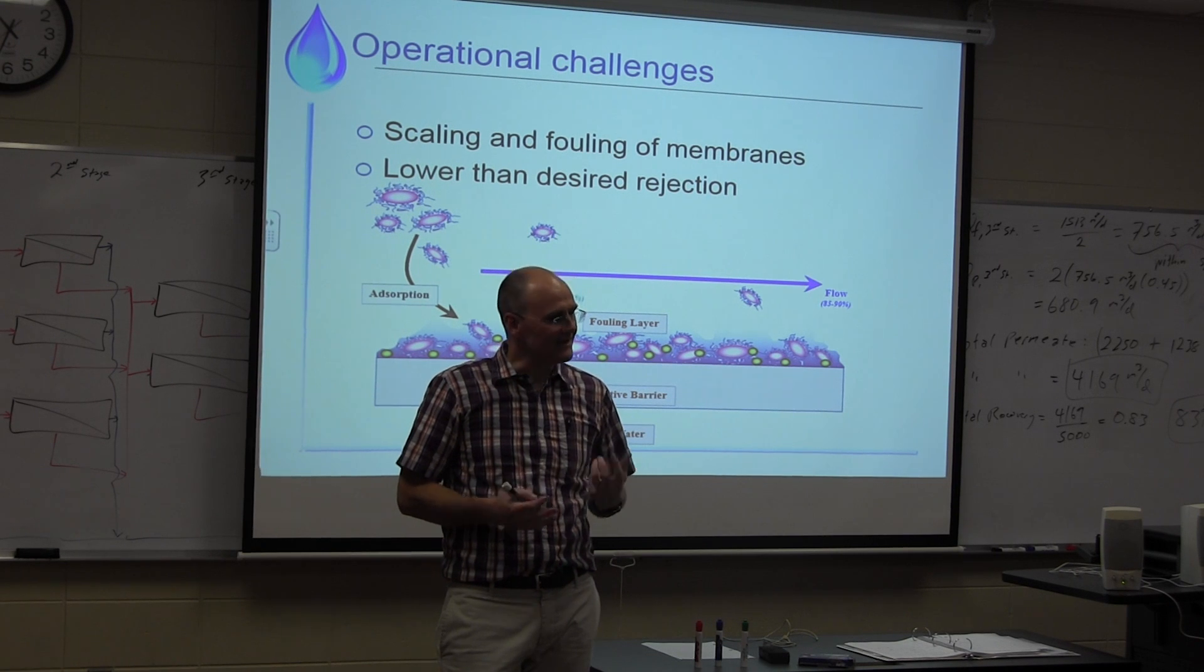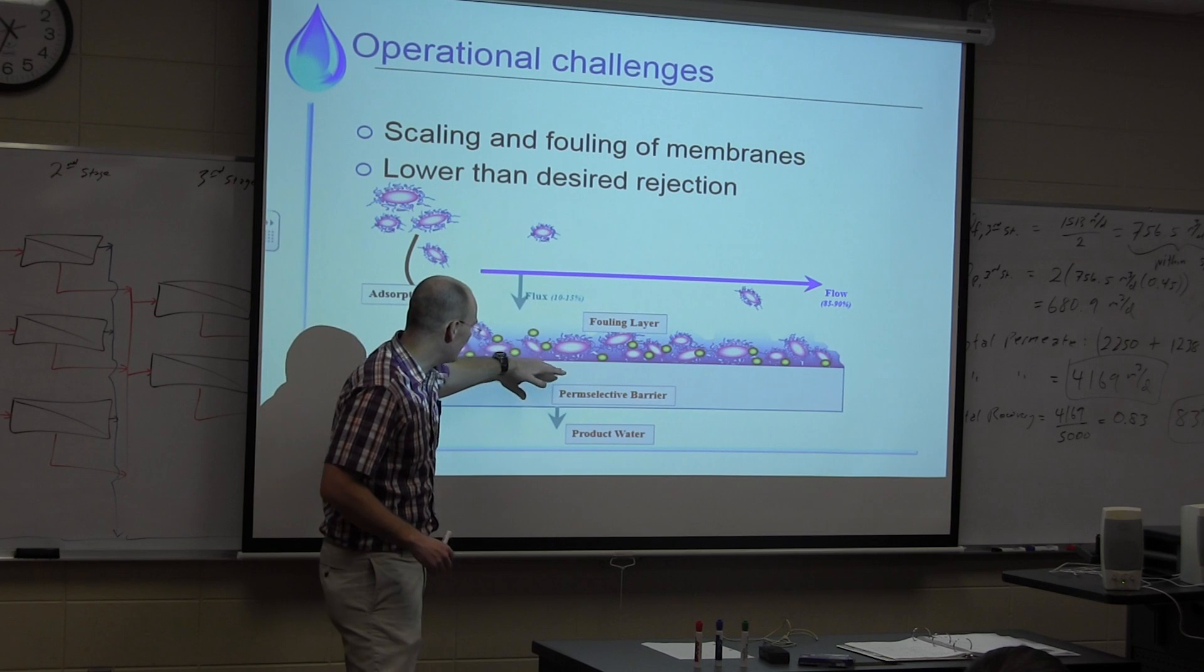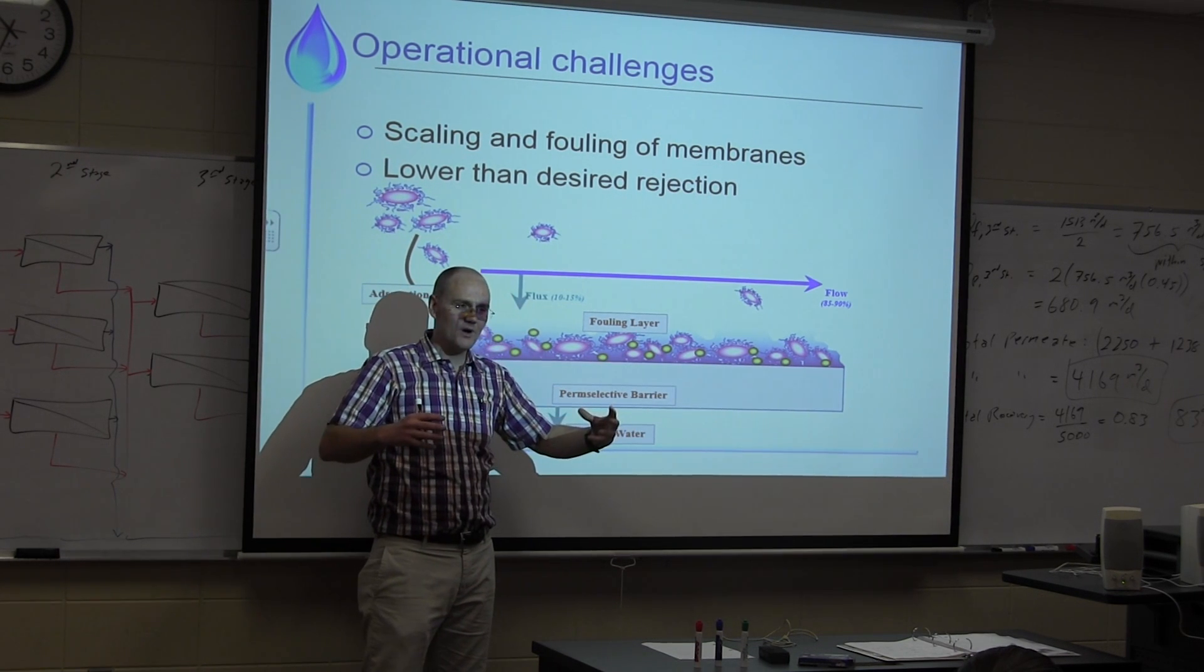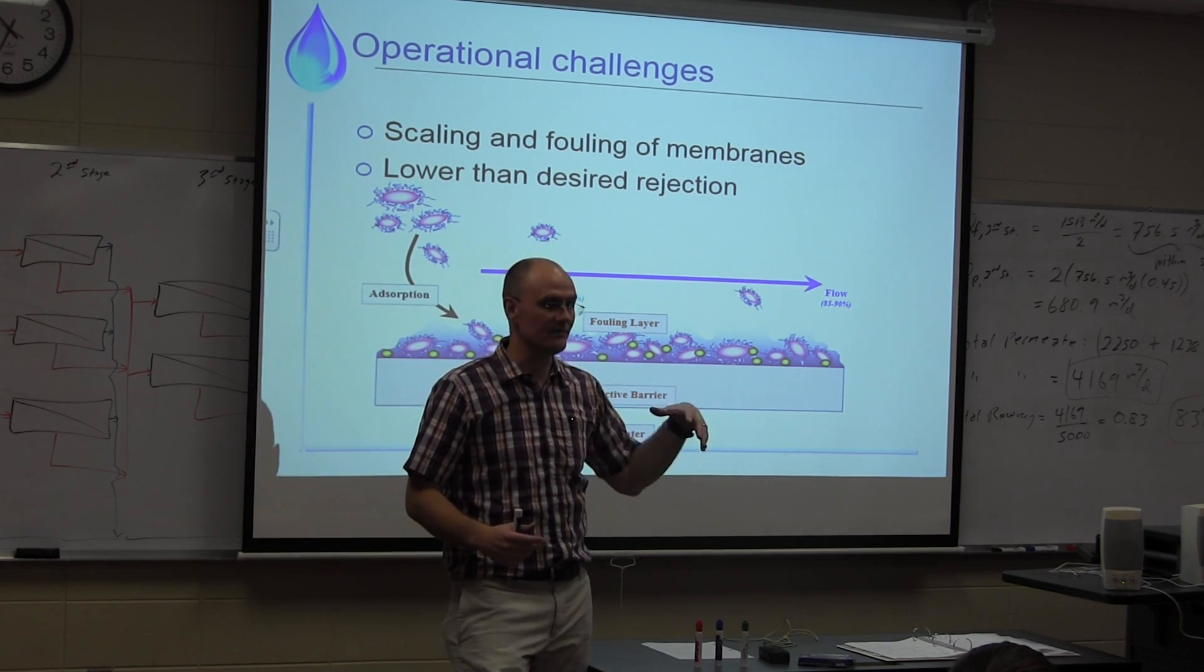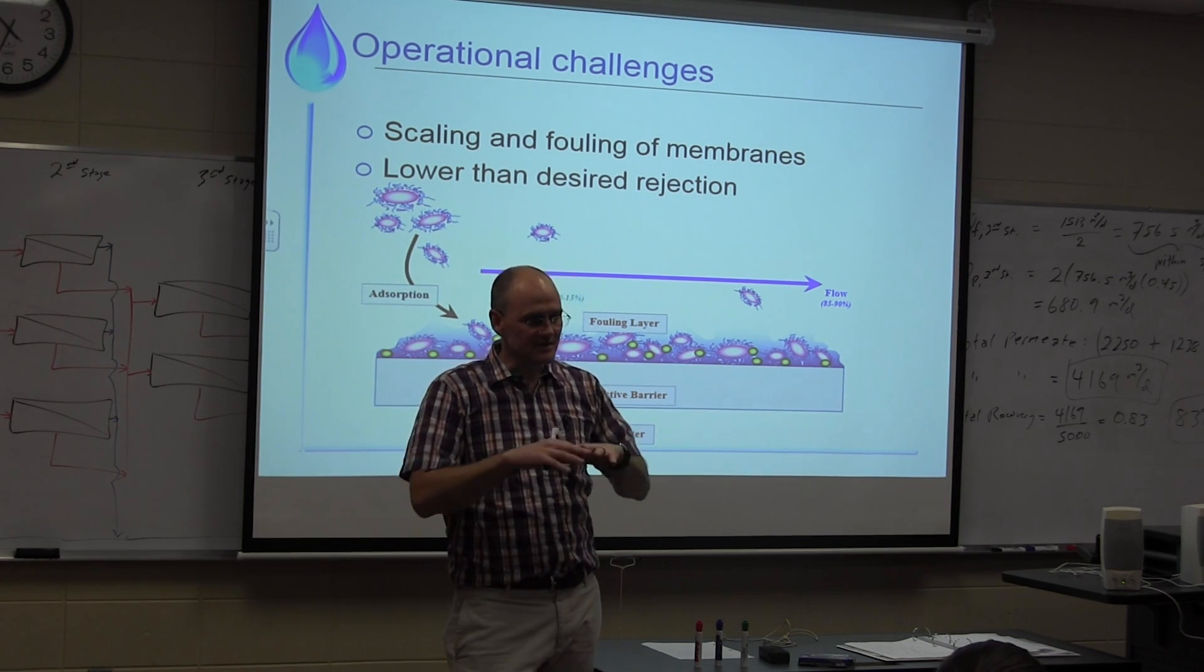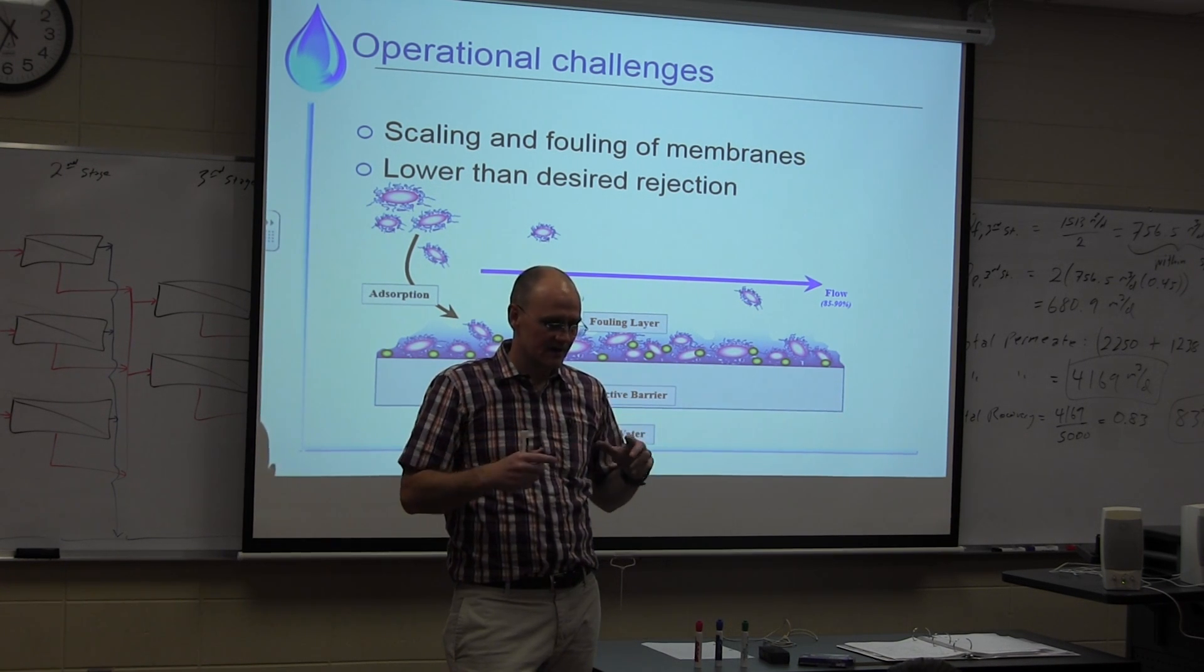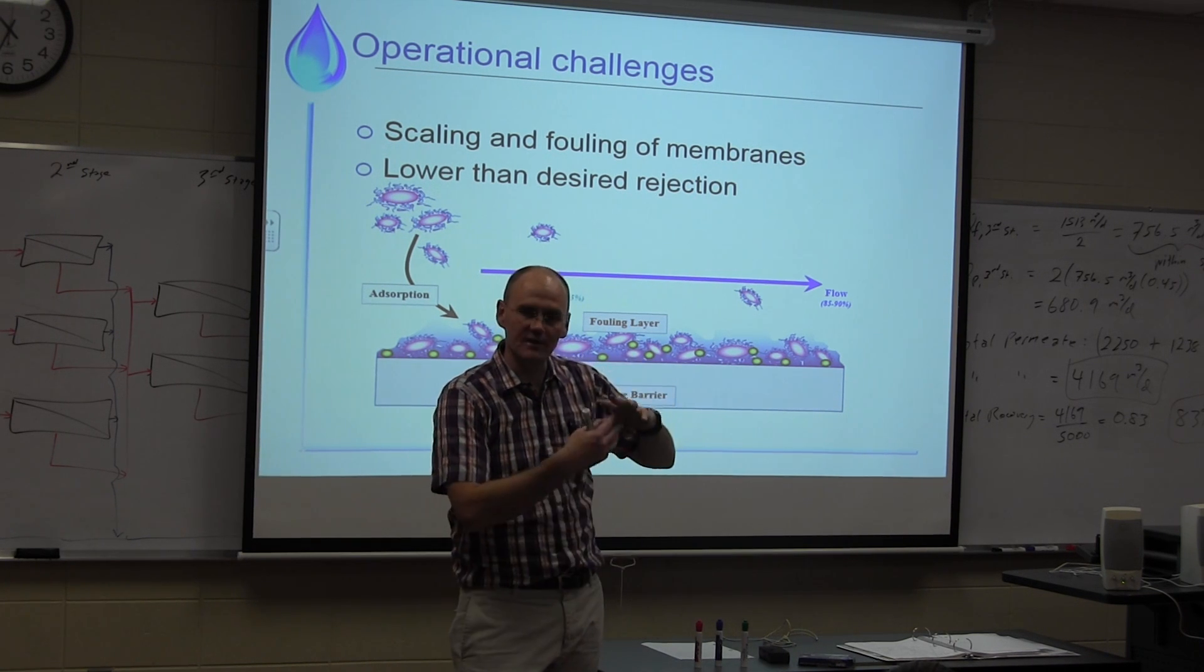NF and RO, you can't really do a backwash. One thing that we need to point out is that the membrane area required for RO and NF is much higher because our fluxes are much lower. And with such low fluxes, you can't really get a strong flow through the membrane that would wash something off.